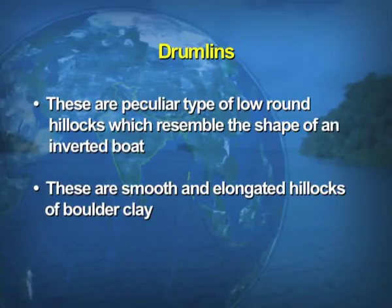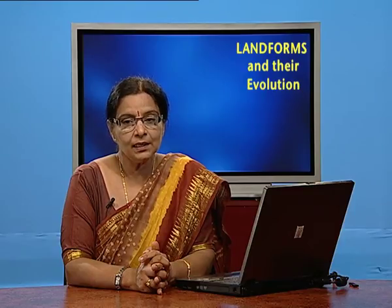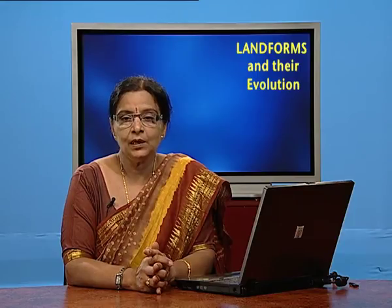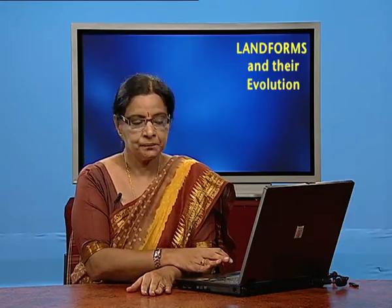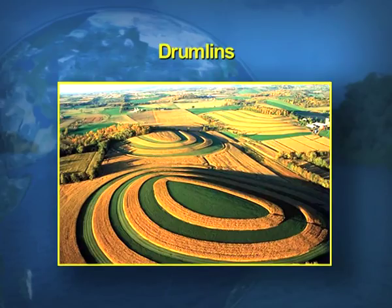Another feature is drumlins. These are peculiar low, round hillocks that resemble the shape of an inverted boat — meaning a high area, but not greatly elevated. These are smooth and elongated hillocks of boulder clay. On the screens, you can see a view of the drumlins, which resemble an inverted boat, smooth but not very high.